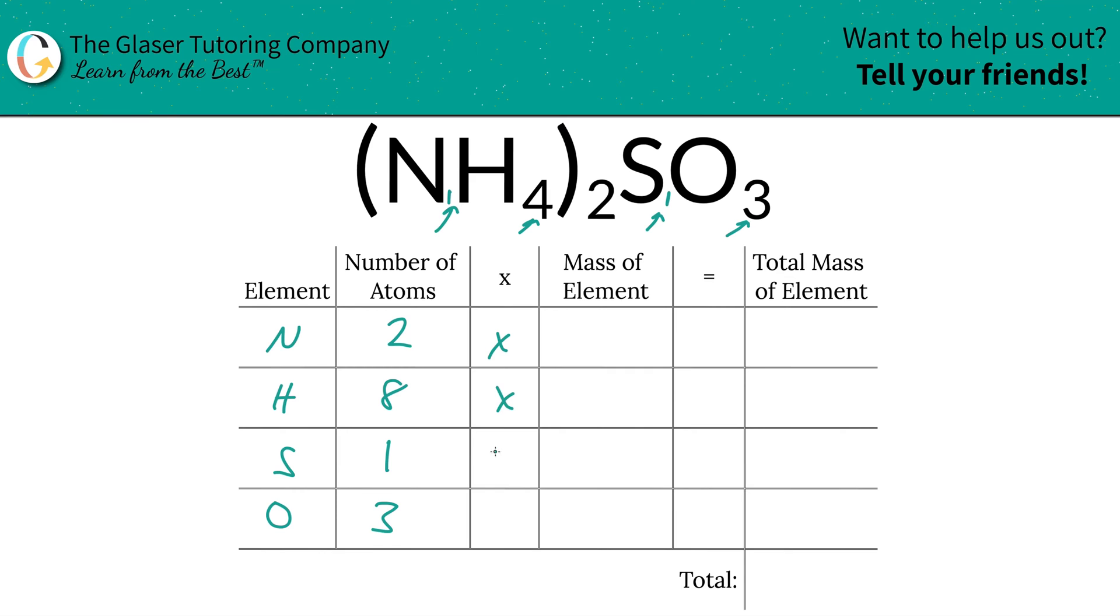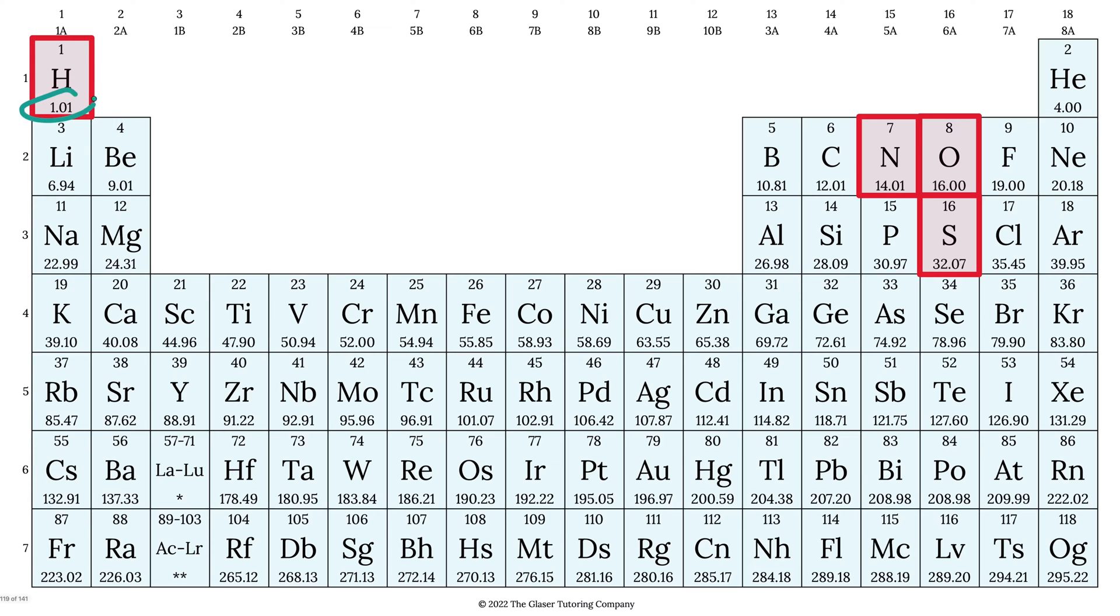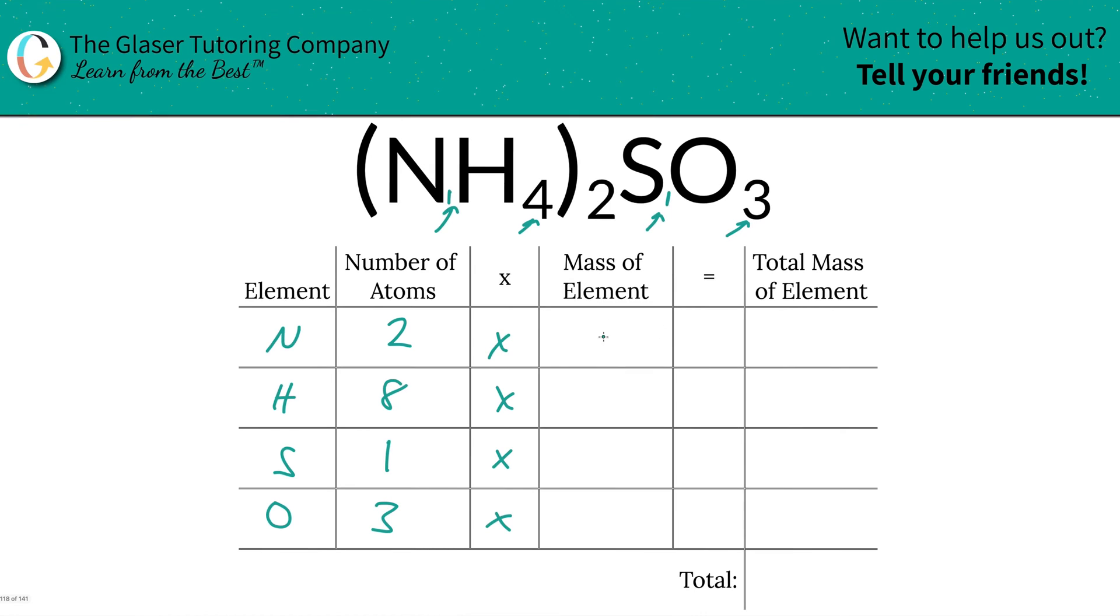And then we're simply going to take those number of atoms and multiply it by the mass of each element. So the masses here are 1.01 for hydrogen, 14.01 for nitrogen, oxygen is 16, and sulfur is 32.07. So that's what we're going to write down.